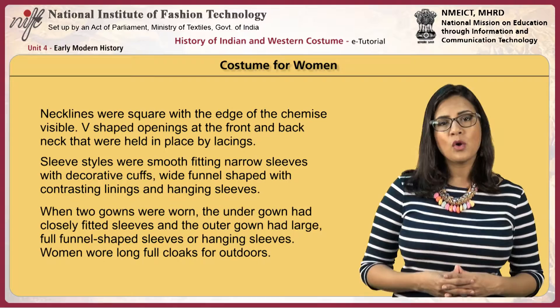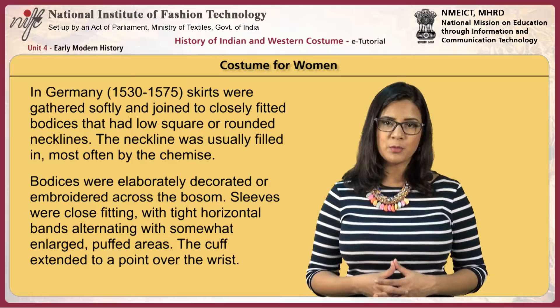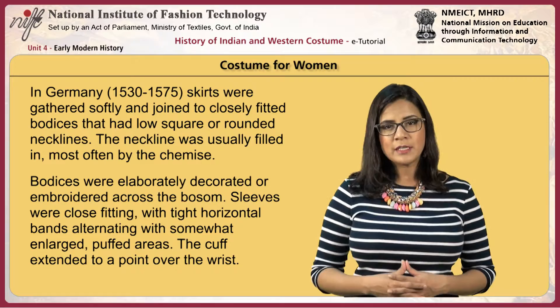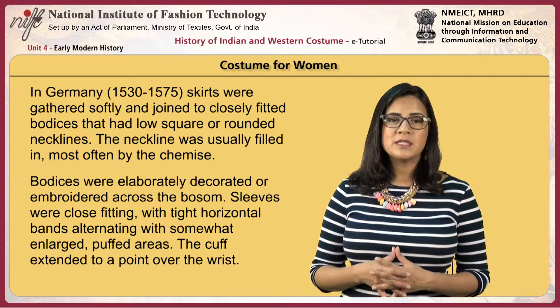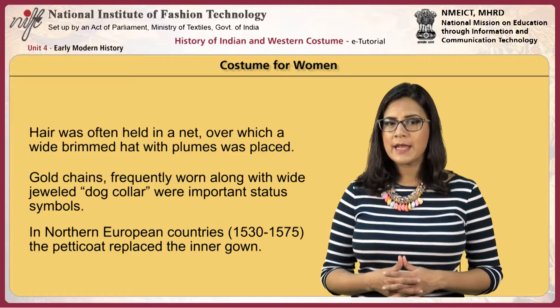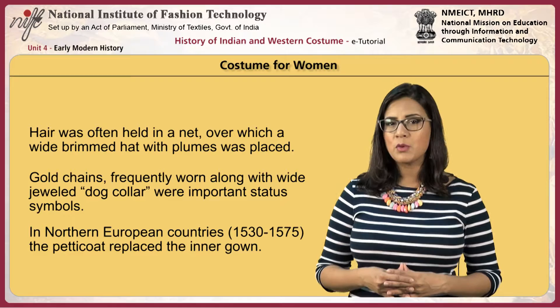In Germany, 1530 to 1575, skirts were gathered softly and joined to closely fitted bodices that had low square or rounded necklines, usually filled in most often by the chemise. Bodices were elaborately decorated or embroidered across the bosom. Sleeves were close fitting with tight horizontal bands alternating with somewhat enlarged, puffed areas. The cuff extended to a point over the wrist. Hair was often held in a net, over which a wide-brimmed hat with plumes was placed. Gold chains, frequently worn along with a white jeweled dog collar, were important status symbols.